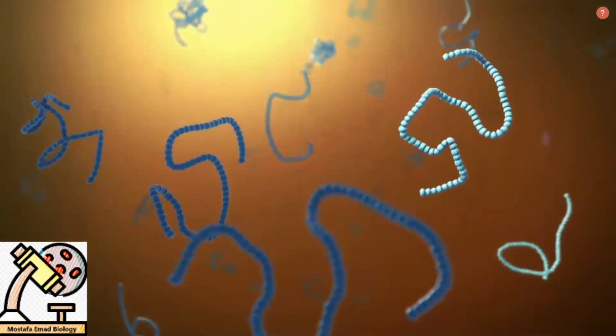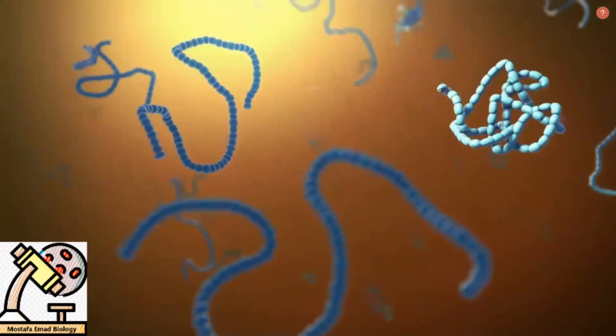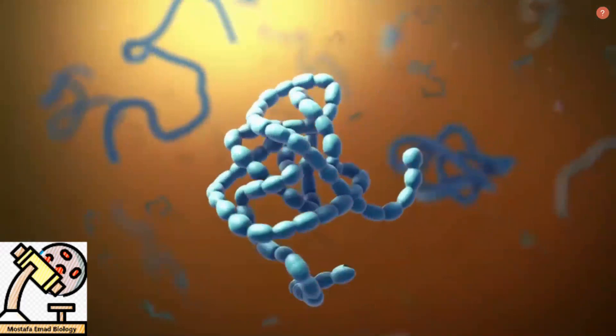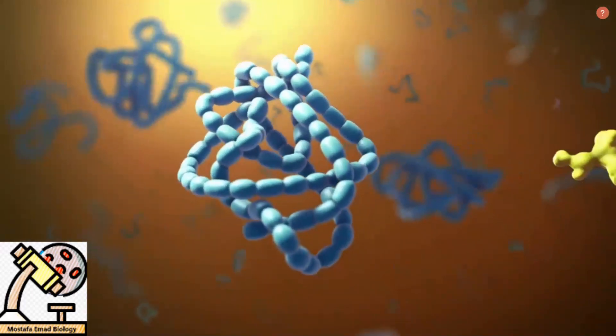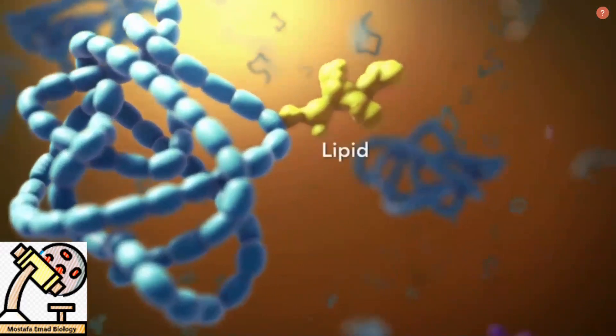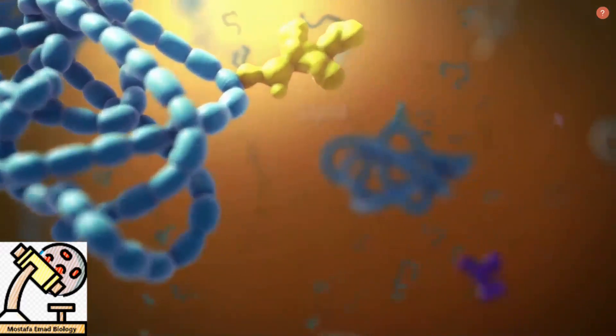As proteins move through the Golgi body, they are customized into forms the cell can use. The Golgi body does this by folding the proteins into usable shapes, or adding other materials onto them, such as lipids or carbohydrates.